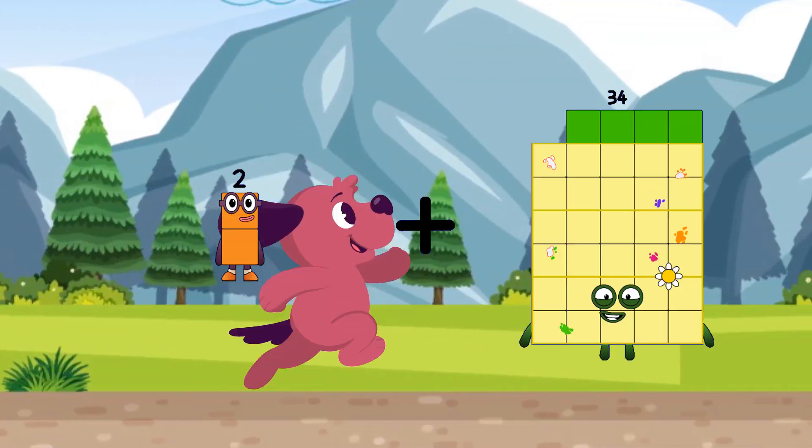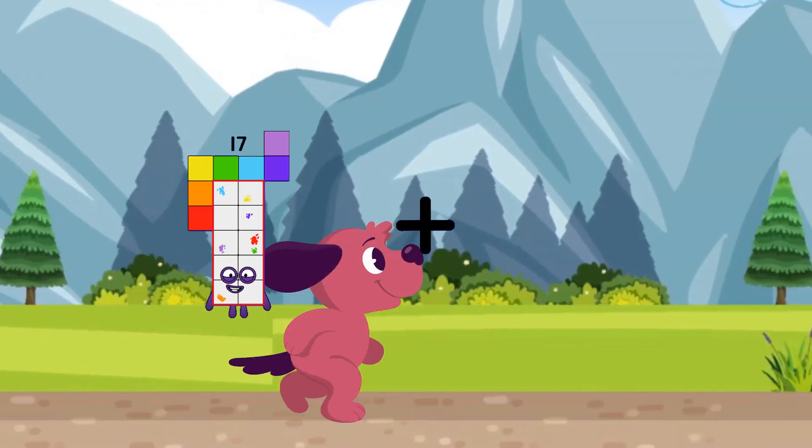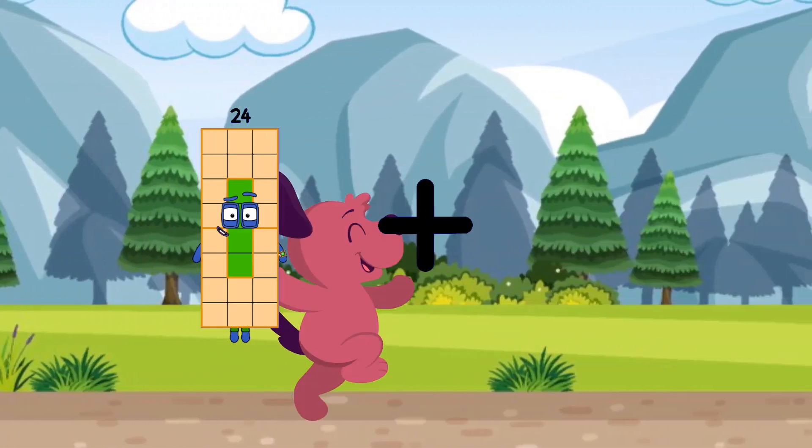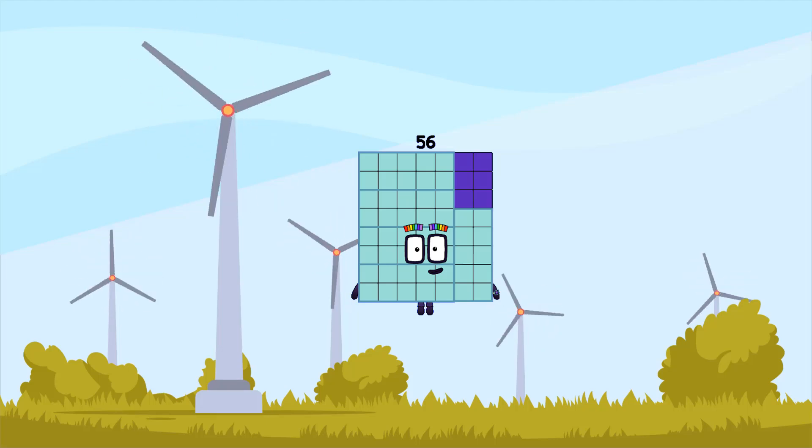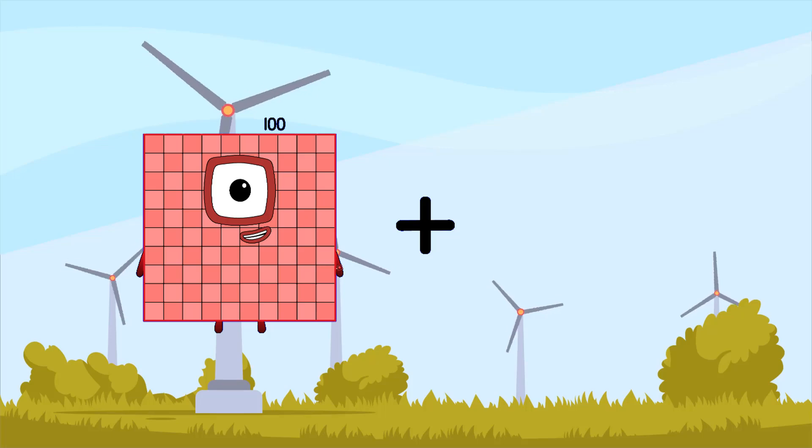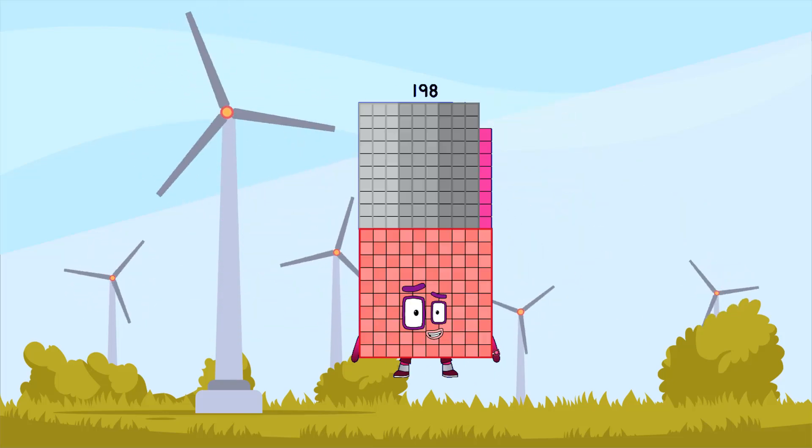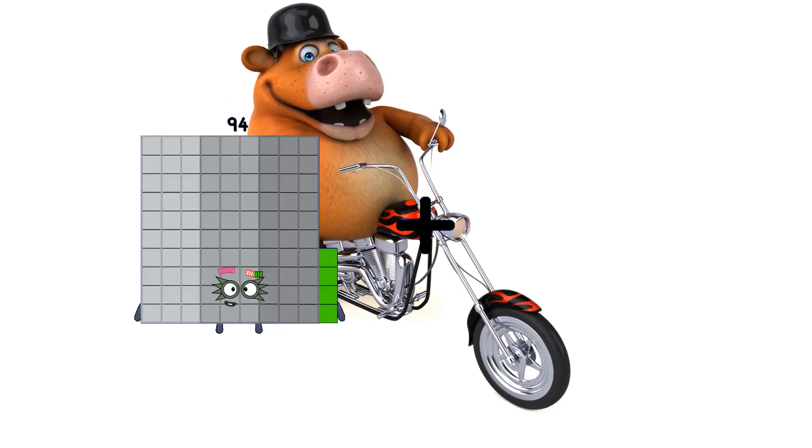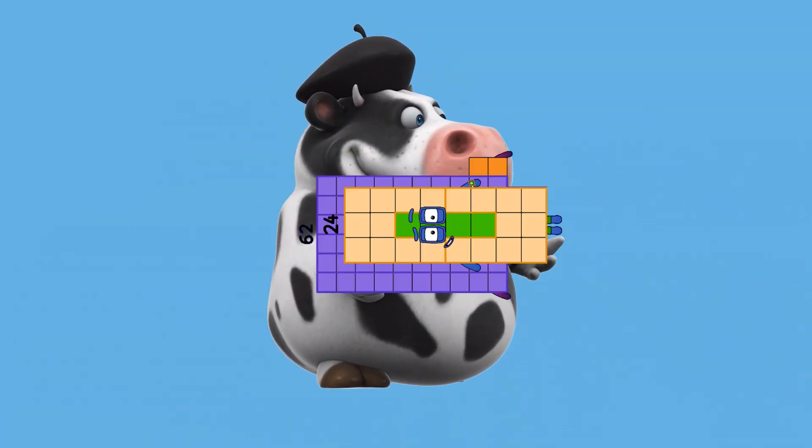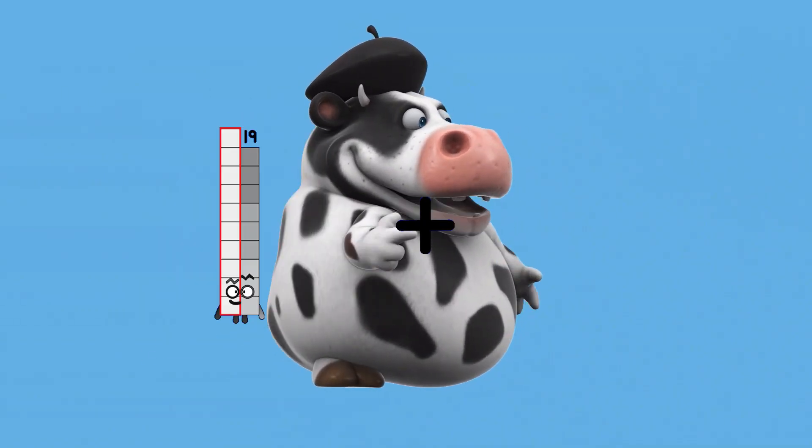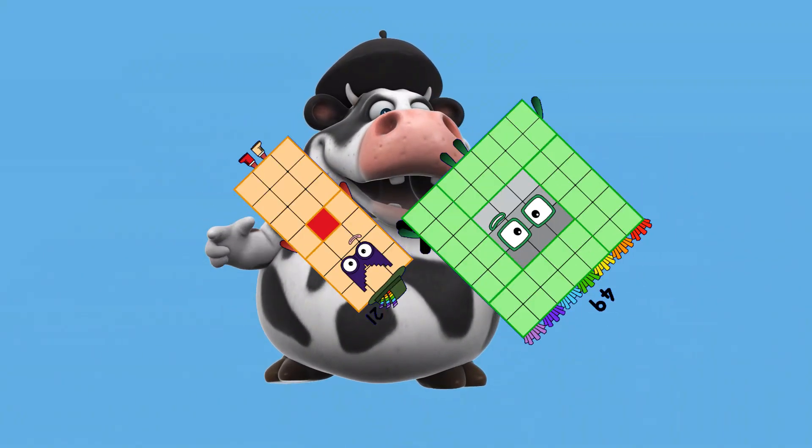2 plus 63 equals 65. 24 plus 32 equals 56. 100 plus 98 equals 198. 62 plus 24 equals 86. 21 plus 49 equals 70.